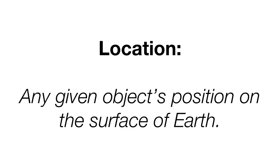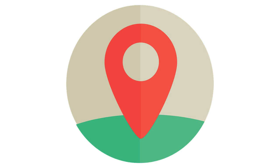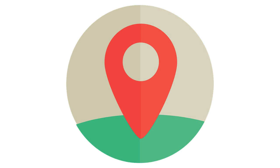Location is any given object's position on the surface of the earth. It could be absolute or relative, and it could have factors like site and situation, place name, or toponym. It could also be mathematical — a set of latitude and longitude coordinates. I always think of location as a pin on the earth, like the pin you find on your maps app on your device.